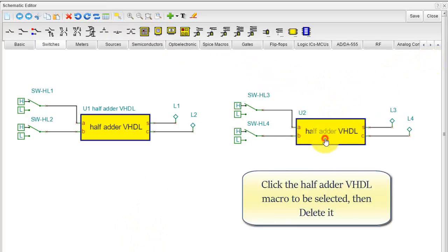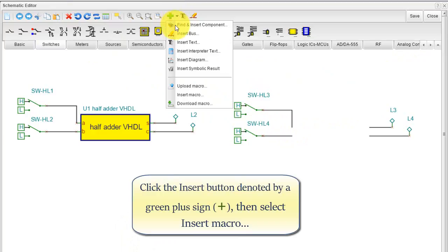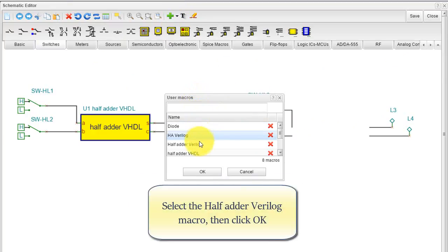Click the HalfAdderVHDL macro to be selected, then delete it. Click the Insert button denoted by a green plus sign, then select Insert Macro. Select the HalfAdderVerilog macro, then click OK.